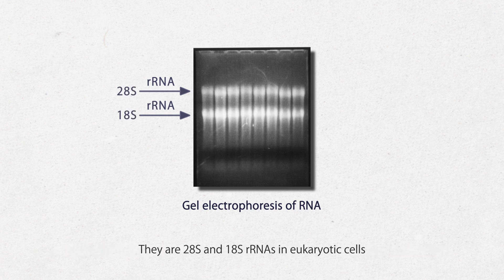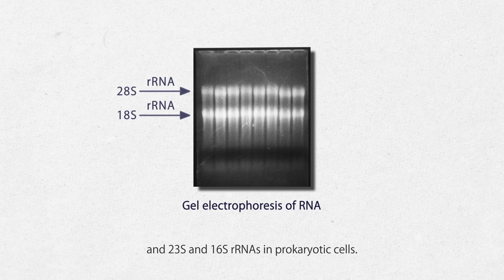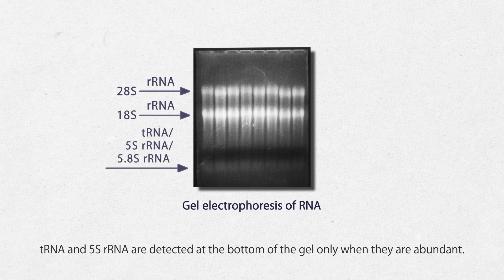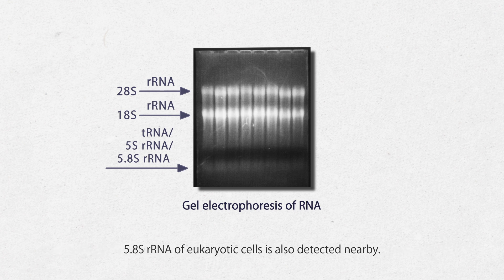There are 28S and 18S rRNAs in eukaryotic cells and 23S and 16S rRNAs in prokaryotic cells. tRNA and 5S rRNA are detected at the bottom of the gel only when they are abundant. 5.8S rRNA of eukaryotic cells is also detected nearby.